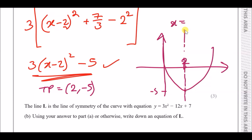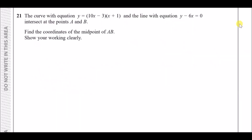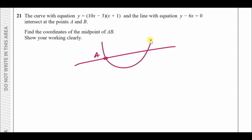The line of symmetry cuts through x equals two, so the equation is x equals two — that's the answer. Now for the next part: the curve C with equation y equals 10x minus three times x plus one is a factorized quadratic, and a line intersects it at points A and B.